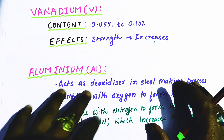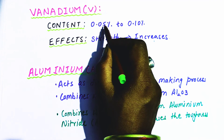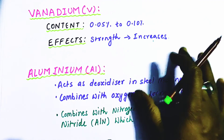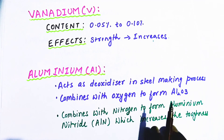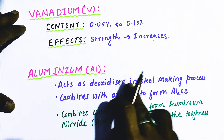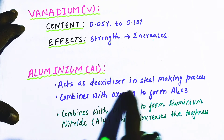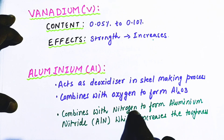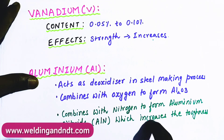Vanadium is present in steel in the range of 0.05 to 0.10 percent, and the effect of vanadium is that strength is increased. Finally, aluminium — like silicon, aluminium also acts as a killing agent or deoxidizer in the steelmaking process. Aluminium reacts with oxygen and forms Al2O3. Another benefit of aluminium is that it combines with nitrogen to form aluminium nitride, and this aluminium nitride increases the toughness of the steel.